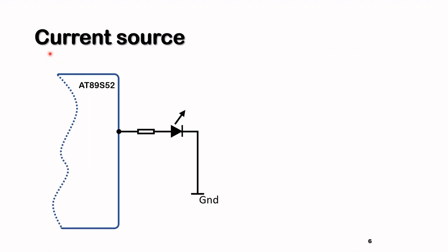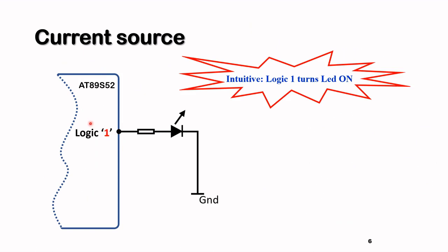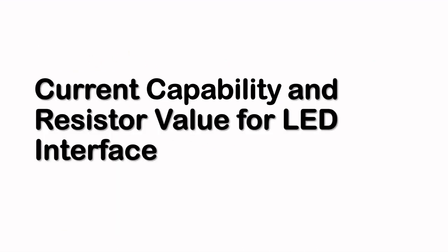The second method is current sourcing. Here, if I put a logic one, the LED will come on because we're operating at around five volts — logic one is at the higher potential compared to the other end, so current will flow and the LED will turn on. This is a more intuitive way of switching the LED: logic one turns the LED on.